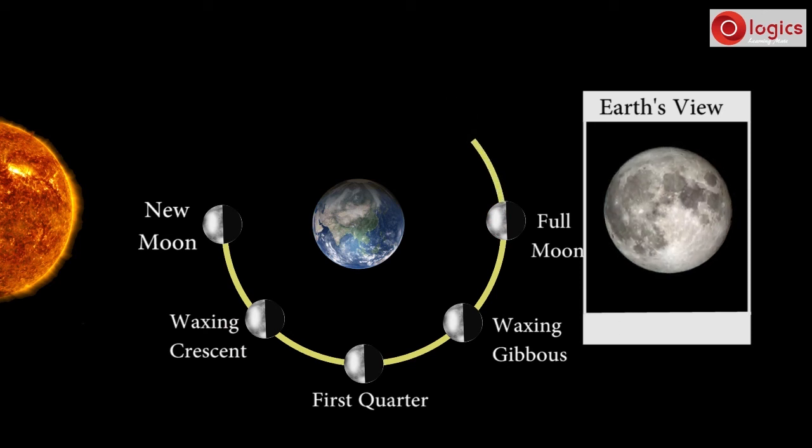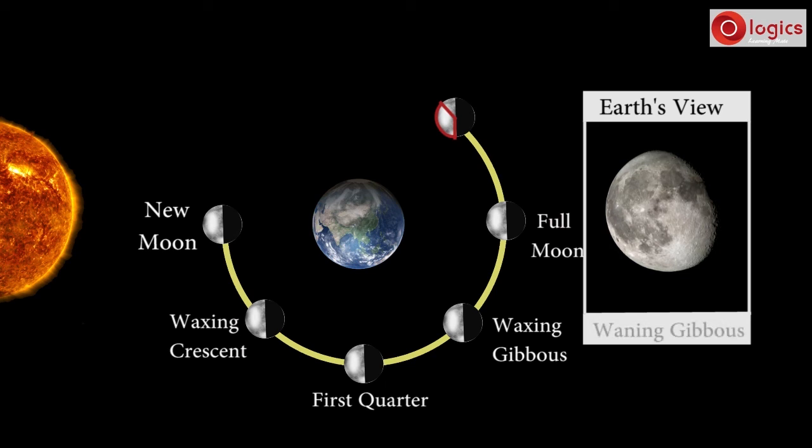Moon reaches this position, and only this part of the brighter side is visible. This phase of Moon is called Waning Gibbous.